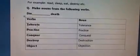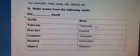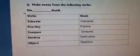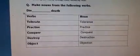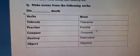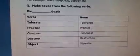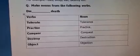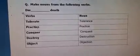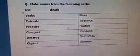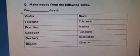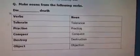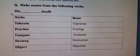The first verb is tolerate. Tolerate means berdash karna, and its noun is tolerance. Tolerance means berdashti. Next word is practice. Practice means amal karna. When we make its noun, it becomes practice — the pronunciation is the same but there is a little difference in spelling. When it is used as a verb, it is spelled with 's'; when used as a noun, the 's' changes to 'c'.